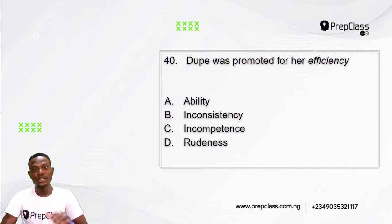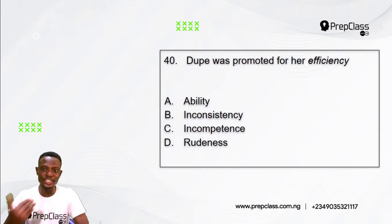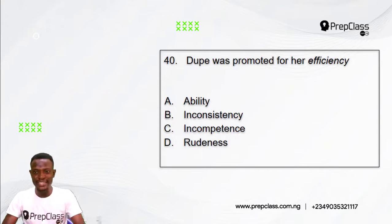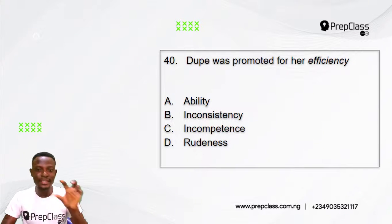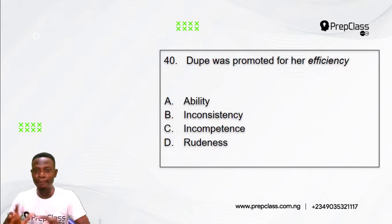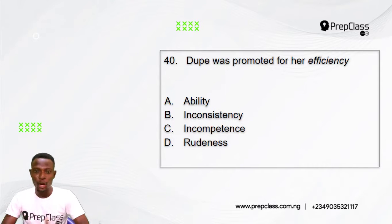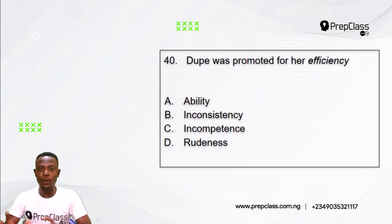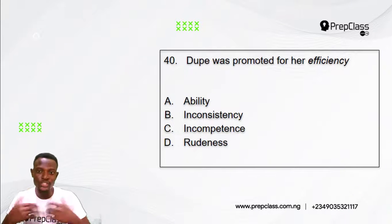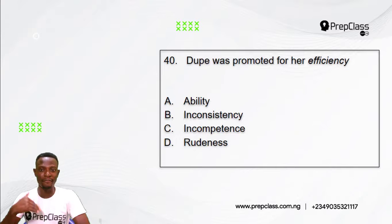Question 40: Dupa was promoted for her efficiency. The word in italics here is 'efficiency.' Options: A) Ability, B) Inconsistency, C) Incompetence, D) Rudeness. Which of these options is the opposite meaning to 'efficiency'?